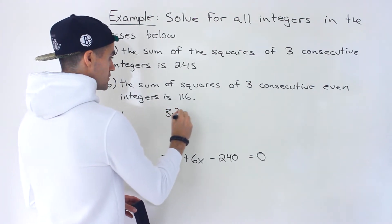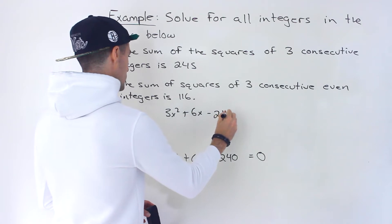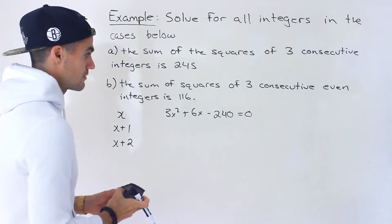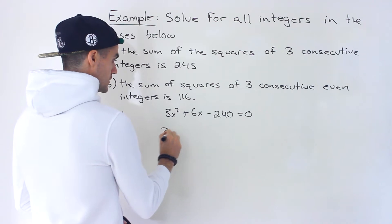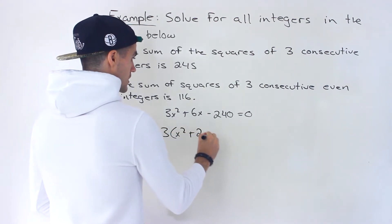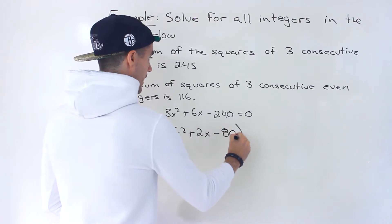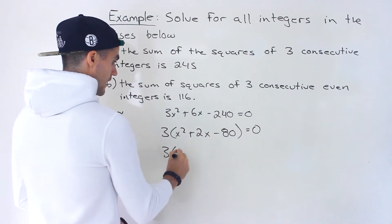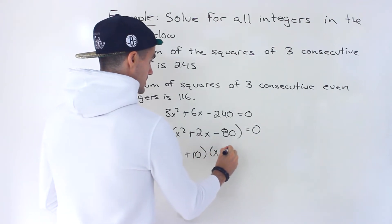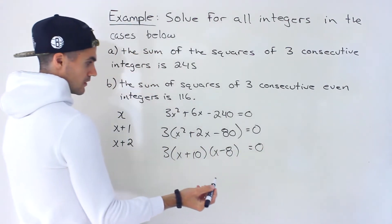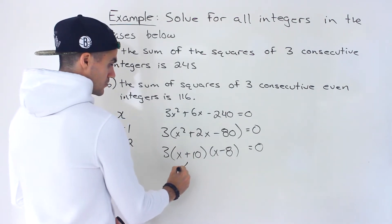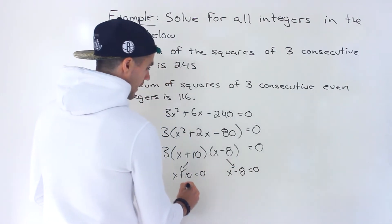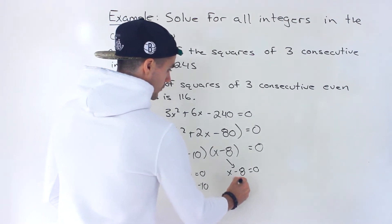There are different ways to solve this — you could use the quadratic formula. But because we're solving for integers, x should be an integer, meaning this should factor smoothly. We can take out a 3 initially, giving x squared plus 2x minus 80 equals zero. That bracket factors into (x plus 10)(x minus 8), so x equals negative 10 or x equals 8.